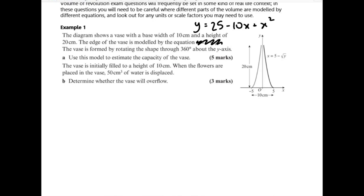So this diagram shows a vase. It tells us the base of the vase is 10 centimeters. So it's five centimeters radius at the bottom. It's got a height of 20 centimeters. It's all marked on the diagram. The edge of this vase is modeled by the equation that I've just replaced in here. And it says it's formed by rotating the shape 360 degrees about the y-axis. So we are going to need x to be the subject of this.